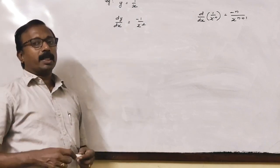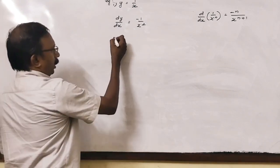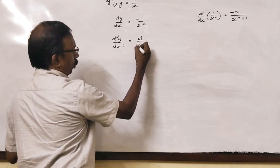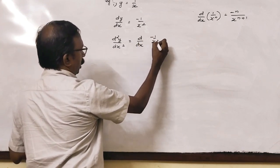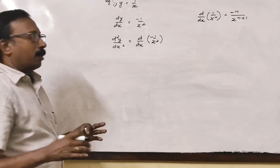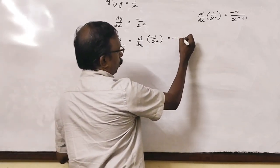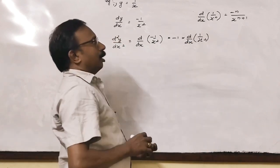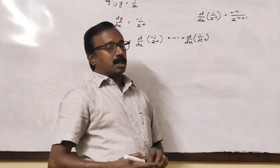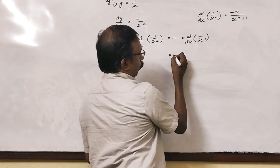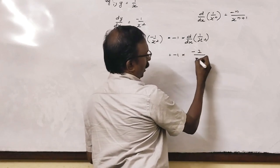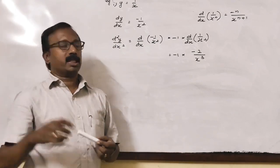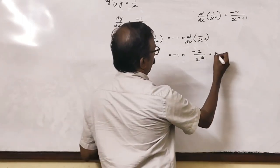The second derivative involves d/dx of minus 1/x². Here minus 1 is a constant, so we take that constant outside: minus 1 into d/dx of 1/x². Using the power rule, we get minus 1 into minus 2/x³, which gives us 2/x³. This is the second derivative.